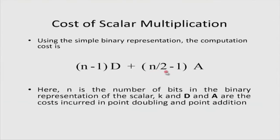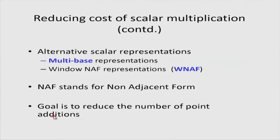Some interesting properties of window NAF: there are at least w-1 zeros between any two non-zero digits in the WNAF representation. The average non-zero density is k/(w+1). For simple NAF (w=2), this is k/3 instead of k/2 - reducing the number of additions. For window size w=3, it becomes k/4, and so the number of additions keeps decreasing as window size increases, though with increasing pre-computation cost.